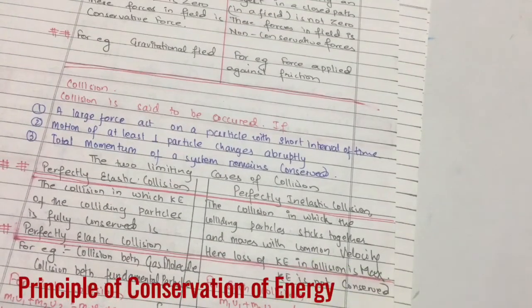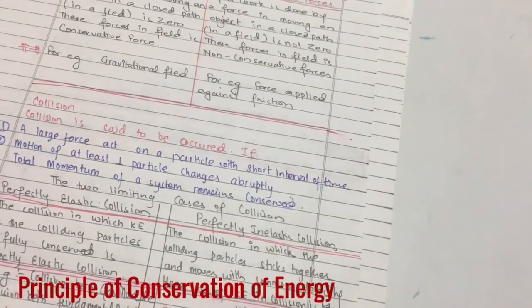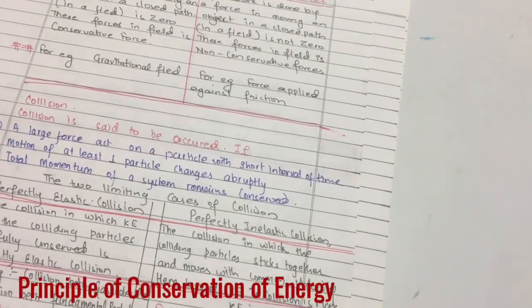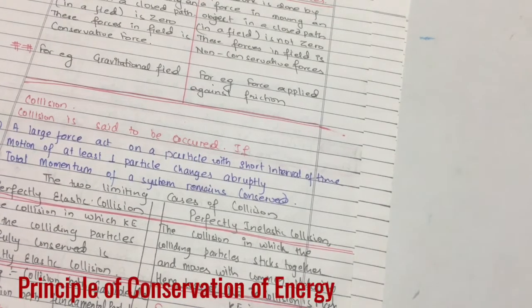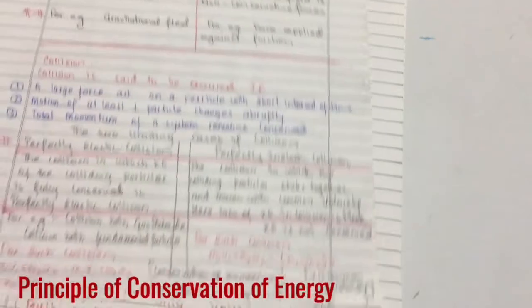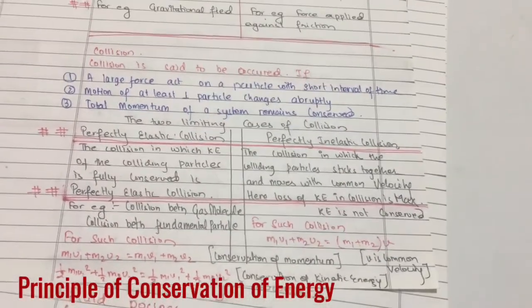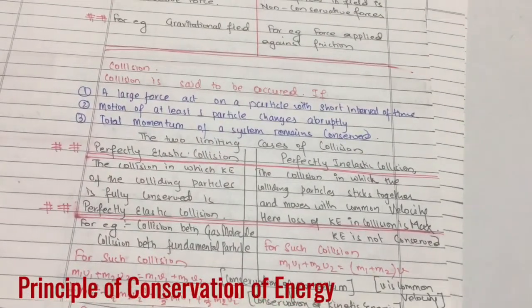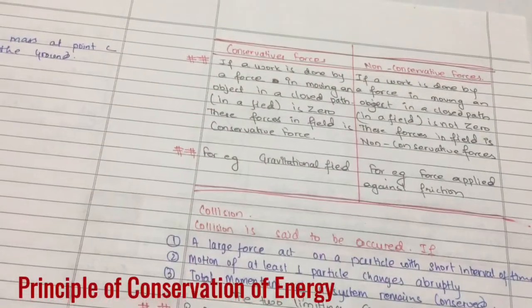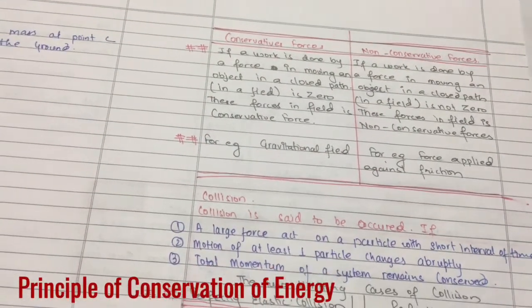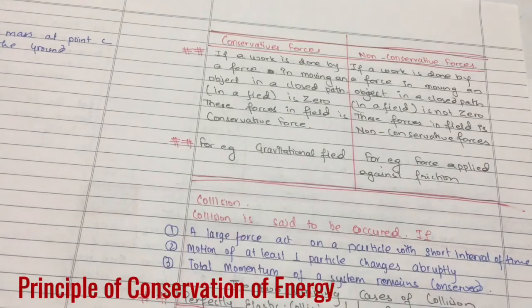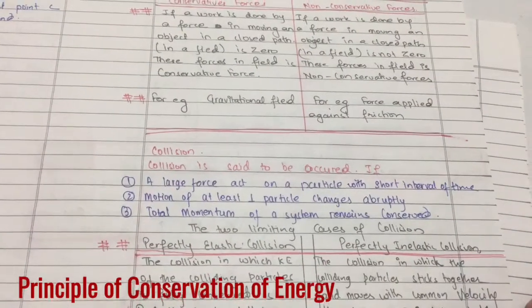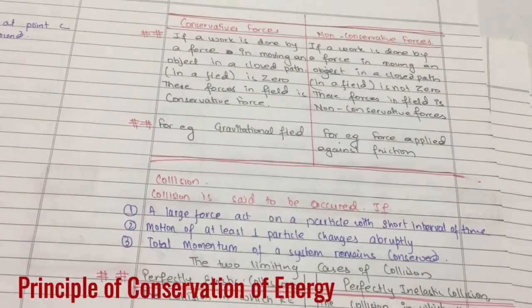For momentum conservation, m1u1 plus m2u2 equals m1 plus m2 times v, where v is the common velocity. I guess you have already understood the differences between perfectly elastic collision and perfectly inelastic collision, conservative forces and non-conservative forces, principle of conservation of energy and so on. Thank you so much for watching our video. Keep tuning in and keep supporting us. Cheers, bye.